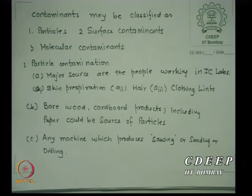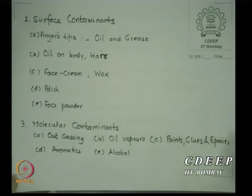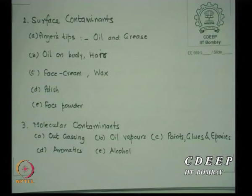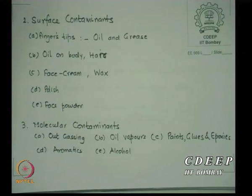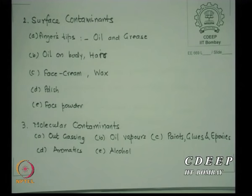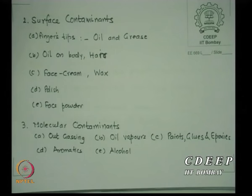The second type is surface contaminants — fingertips. Wherever we use fingers, by design or otherwise, we get some oil or grease on our fingertips. From the body there will also be oil. These actually stick to the surface of a wafer — they get on it by floating in the air and then attach to silicon. Polish, nail polish, and facial powder are also contaminants.